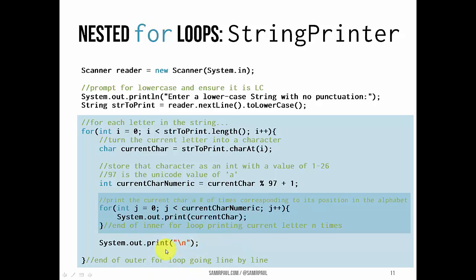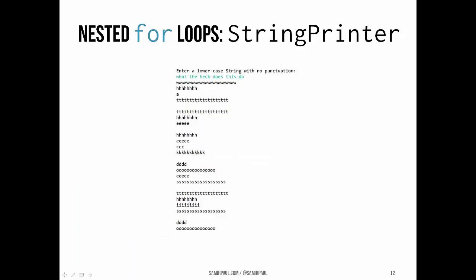It goes through and does that for each character in the string. For example, entering 'what the heck does this do?' will print each letter repeated a number of times corresponding to its position in the alphabet — so 'w' prints many more times than 'a', 't' prints more than 'd', and so on. Just a goofy little thing, but a nice demonstration of how nested for loops can operate.